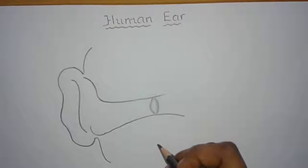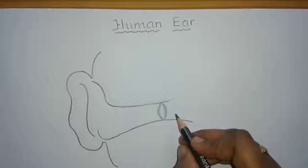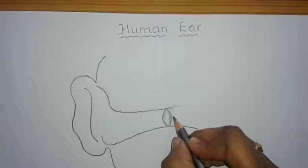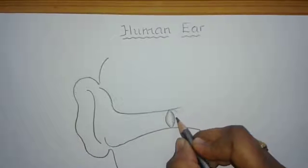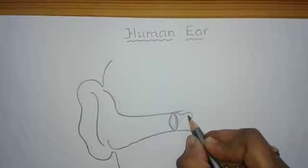Now let us draw the second important part of the ear, that is the middle ear. It consists of three small bones. The first one is malleus, also called sutige in Kannada. It is just like a hammer. Draw a structure which looks like a hammer.